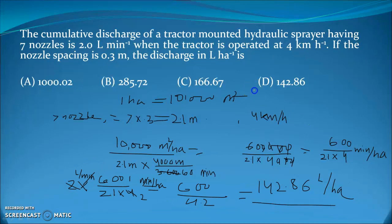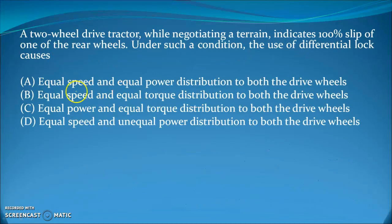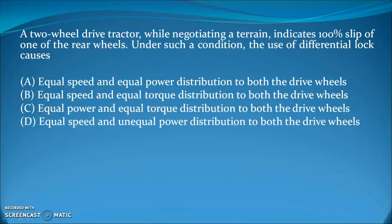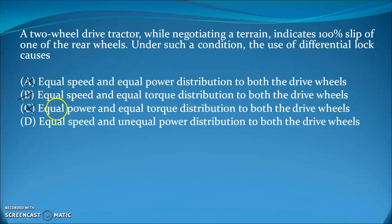Next question: a two-wheel drive tractor negotiating terrain shows 100% slip on one rear wheel. Under such a condition, the use of a differential lock causes what? Equal speed and equal power is not correct because with 100% slip on one side, no traction power is developed there. Equal speed and equal torque is also not the answer. The answer is equal speed but not equal power, because the differential lock gives the same speed to both wheels, but most power is transferred to the wheel that has traction.